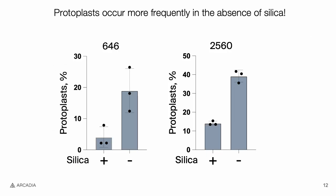To determine if silica plays a role in cell morphology, we grew cells in the presence or absence of silica. Silica-free media was prepared and stored in plastic bottles, and cells were grown in plastic flasks to avoid residual silica from borosilicate labware seeping into the media. Interestingly, cells from two different strains grown in the silica-free media formed more protoplasts than cells grown in the presence of silica. Whether this is dependent on a silica-actin relationship, or if silica just strengthens the cell wall independent of actin, is currently unclear.